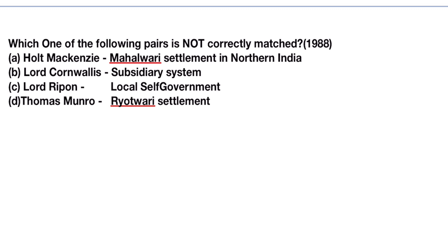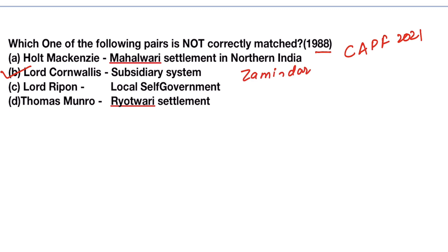Which one of the following pairs is not correctly matched? Asked in 1988 UPSC Prelims, then repeated in CAPF 2021. The pairs are: Holt McKenzie – Mahalwari Settlement in Northern India; Lord Cornwallis – Subsidiary System; Lord Ripon – Local Self-Government; Thomas Munro – Ryotwari Settlement. The answer will be B, Lord Cornwallis, because Lord Cornwallis started the Permanent Settlement, meaning the Zamindari System, and not the Subsidiary System.